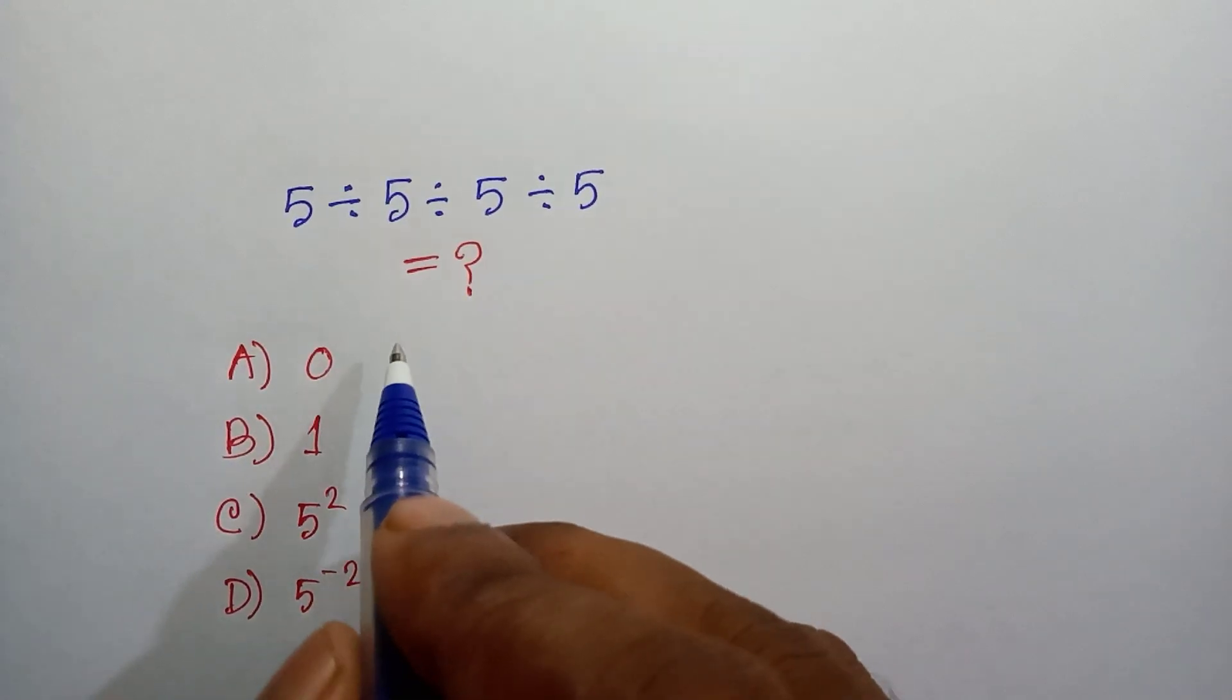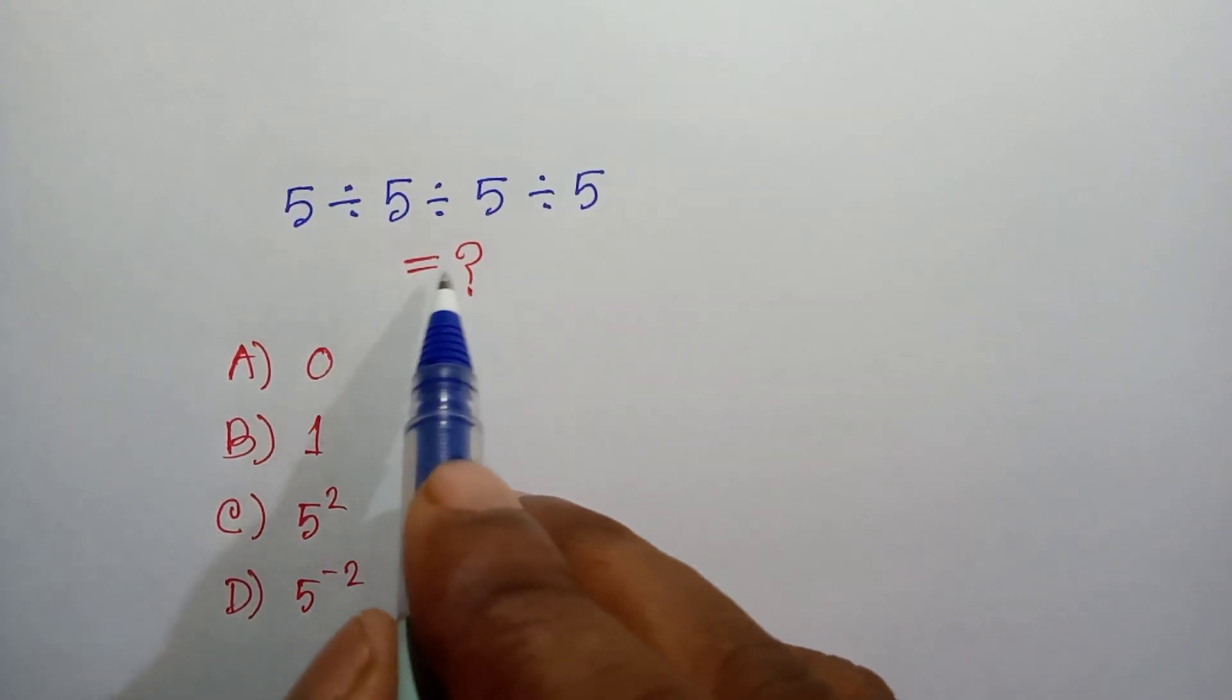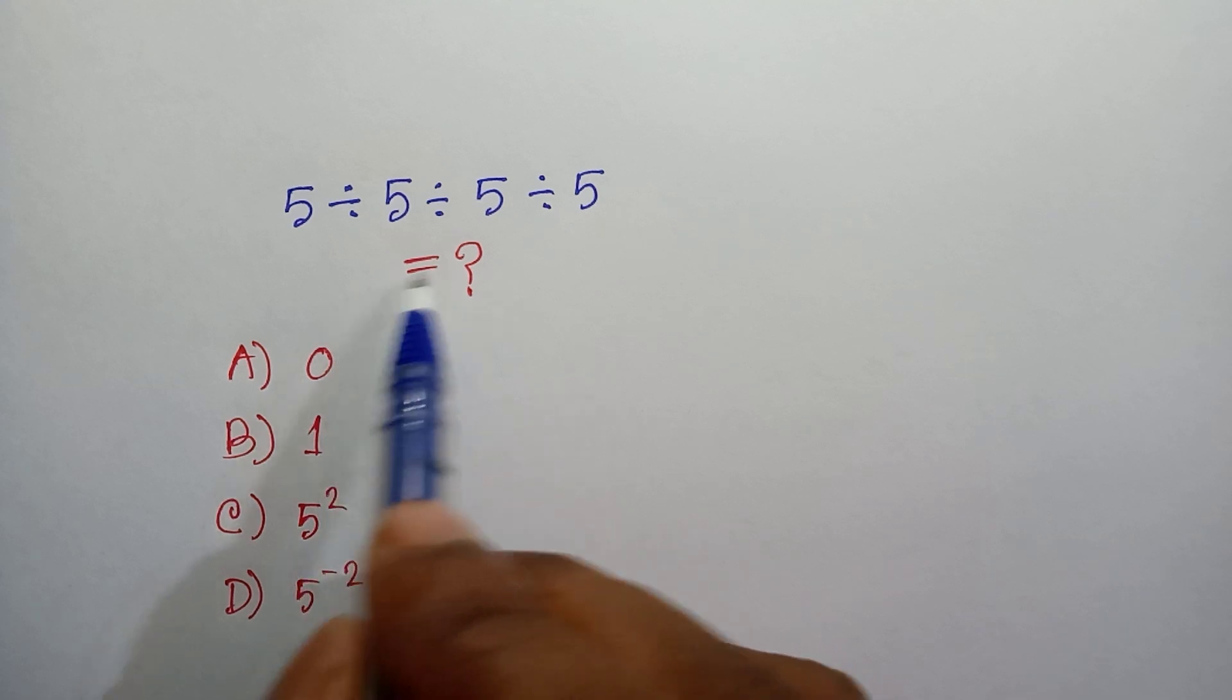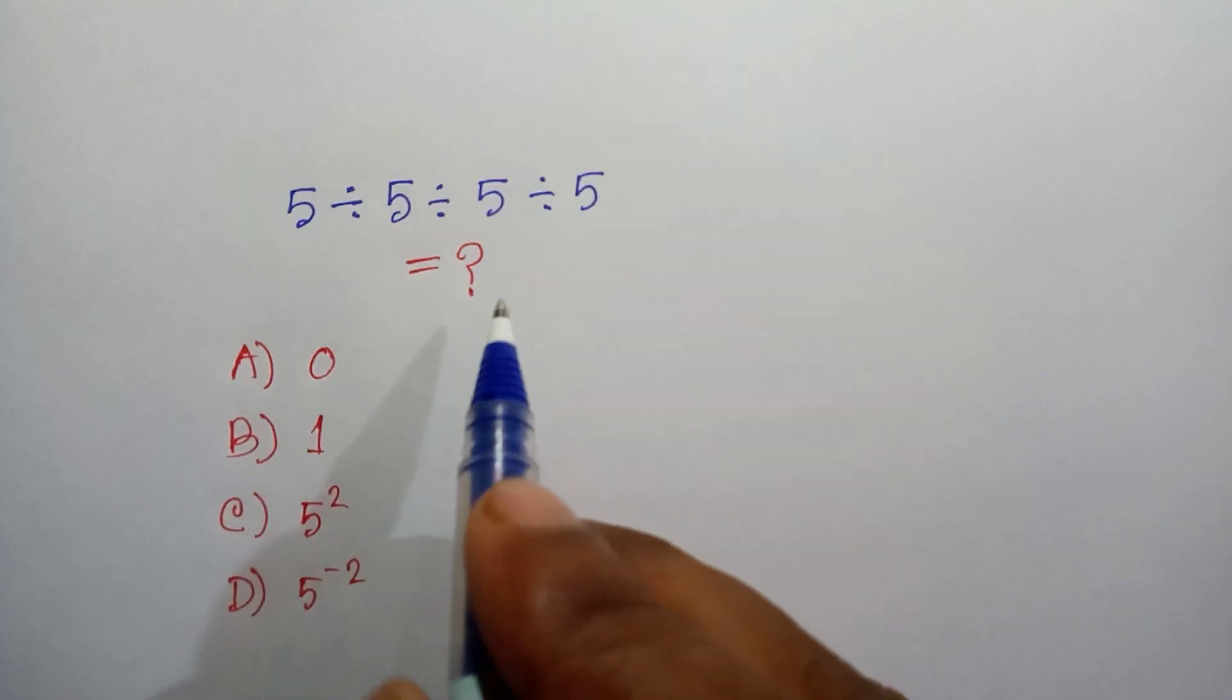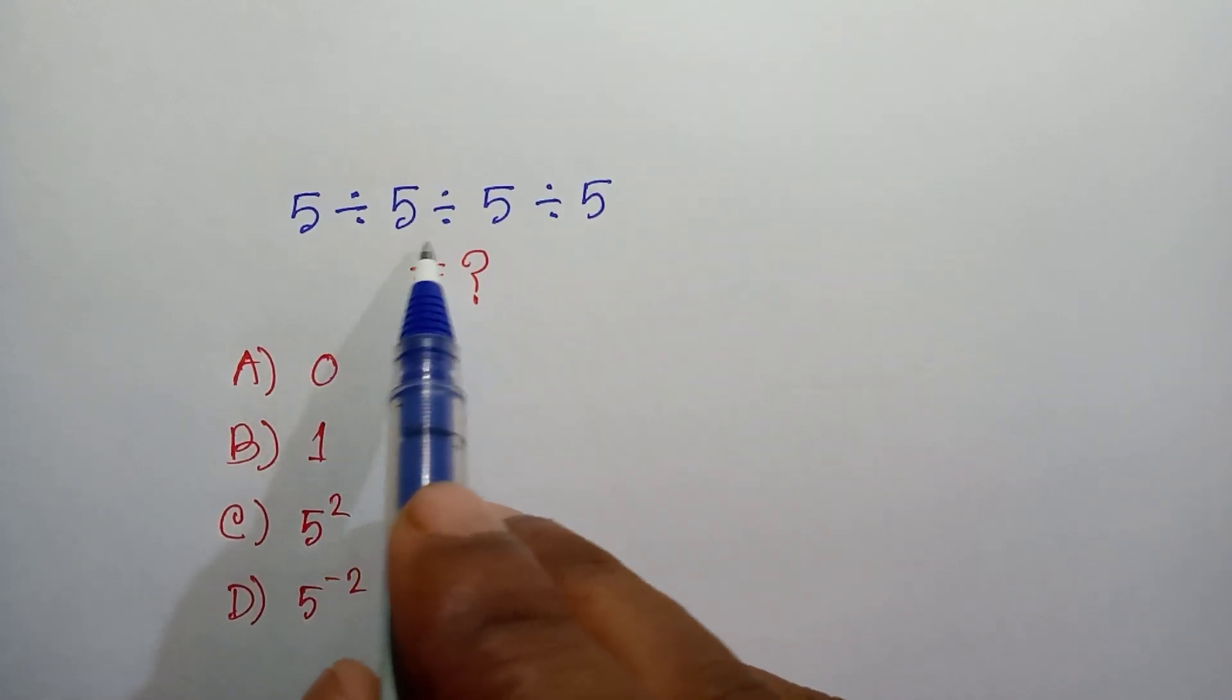Hi everyone, welcome back to my channel. Today I will solve this math olympiad question. It will be an easy problem, but if you're not careful you will get it wrong. We have given 5 divided by 5 divided by 5 divided by 5.